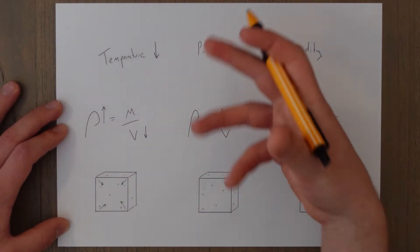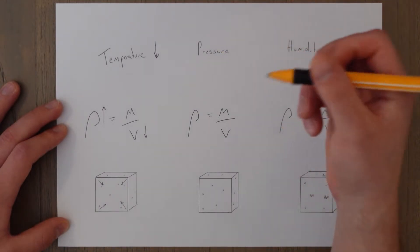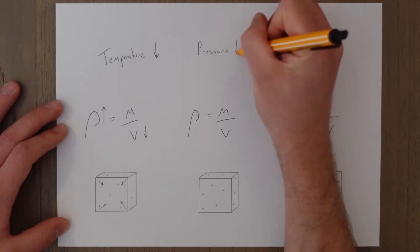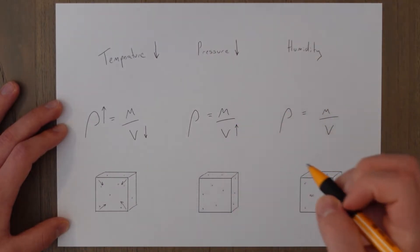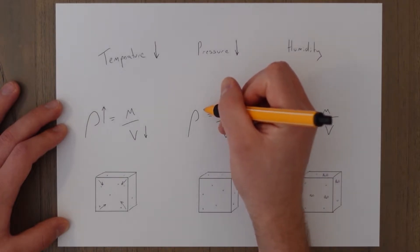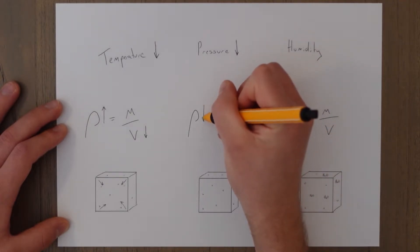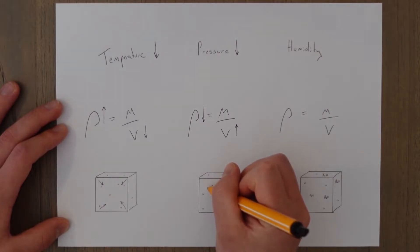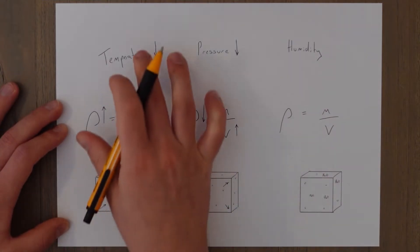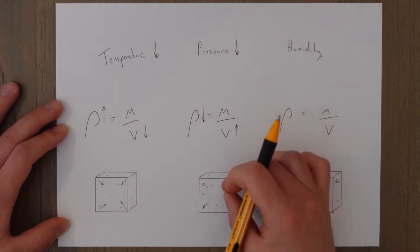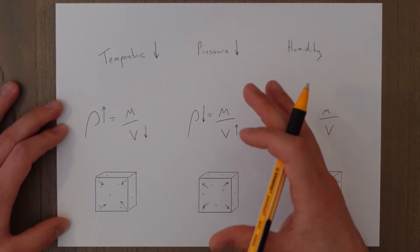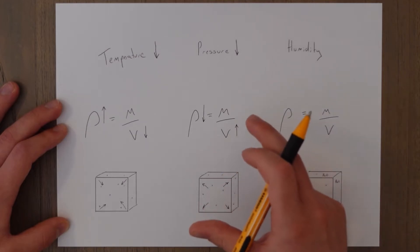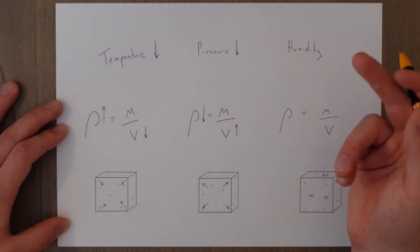Pressure influences density in the same sort of way. As the pressure drops, the air expands, which means the density will also decrease. Think about the box expanding as the pressure drops — the volume expands as the pressure goes down, which means that the density decreases.